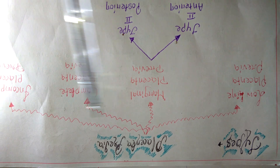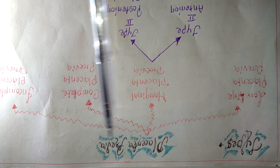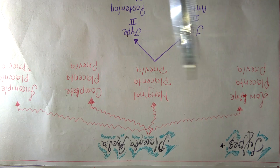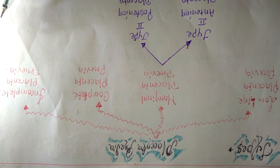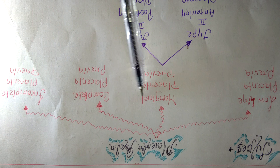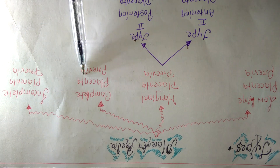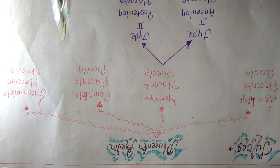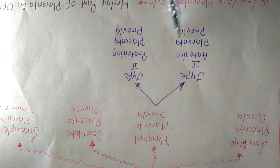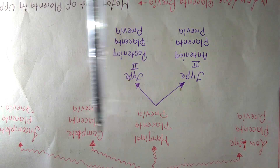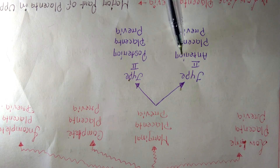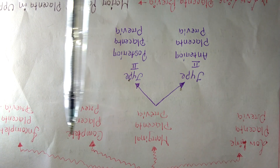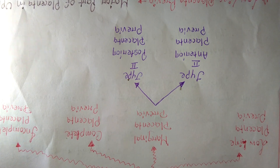Now let's understand the types of placenta previa. Placenta previa is mainly divided into four types: low-lying placenta previa, marginal placenta previa, complete placenta previa, and incomplete placenta previa. Marginal placenta previa is further divided into two subtypes: type 2 anterior and type 2 posterior placenta previa.